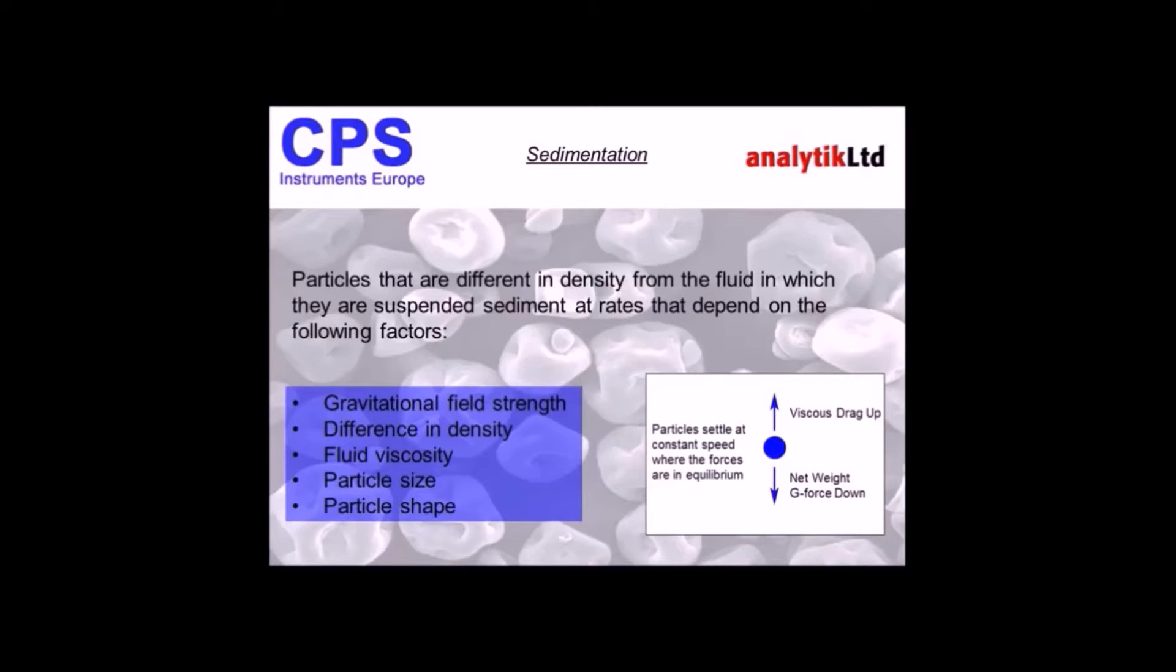We can achieve disc speed up to 24,000 RPM, and that creates a g-force of about 29,000 at the edge of the disc. The higher the g-force, the faster the sedimentation rate.